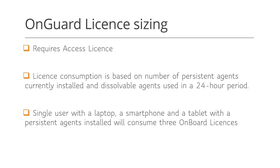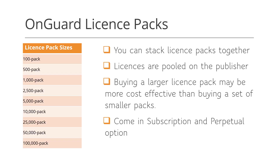License consumption is based on the total number of persistent agents that are installed, plus the number of dissolvable agents that were used in the preceding 24-hour period. For example, a single user with three devices all with a persistent agent installed will consume three OnGuard licenses. OnGuard license packs come in the same sizes as all other application licenses, between 100 and 100,000 per pack. They can be stacked and purchased on either a subscription or a perpetual model.